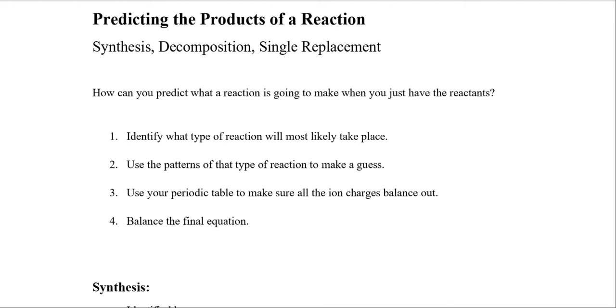So how can you predict what a reaction is going to make when you have just the reactants? There are four steps that allow you to do it with excellent ease. First, you have to identify the type of reaction that is most likely going to take place. Then you use the patterns of the reaction type that you've identified to give yourself a guess, then you use your periodic table to make sure that your ion charges balance out, and finally you wrap up by balancing the final equation.